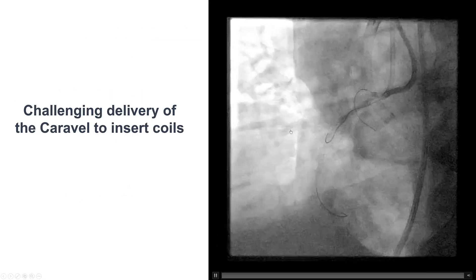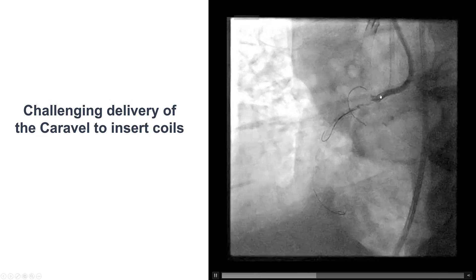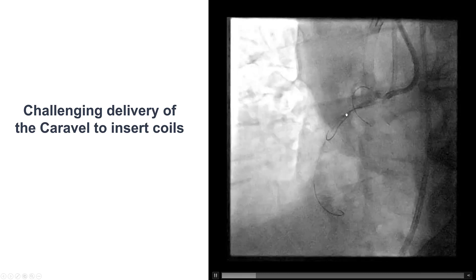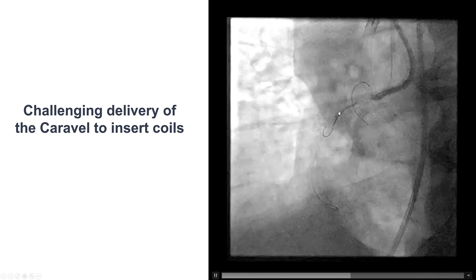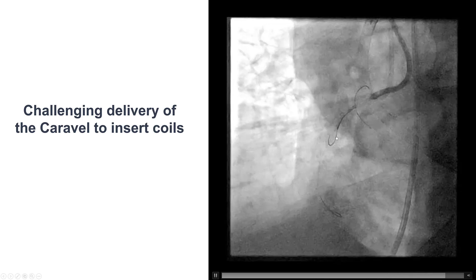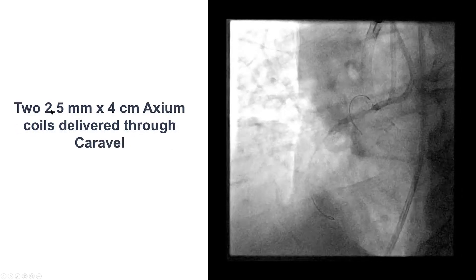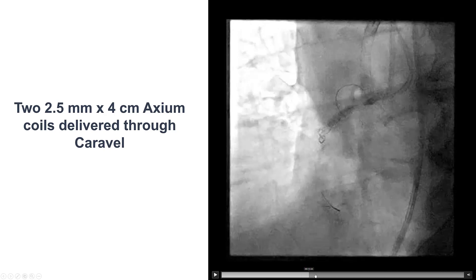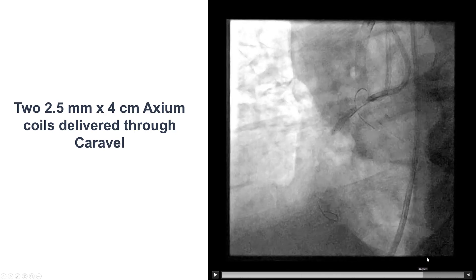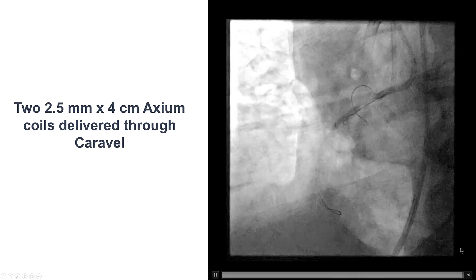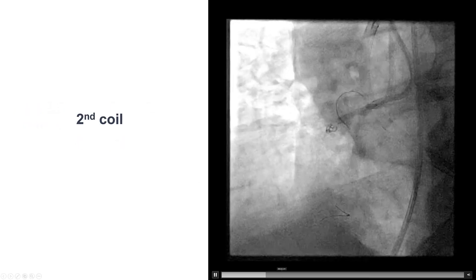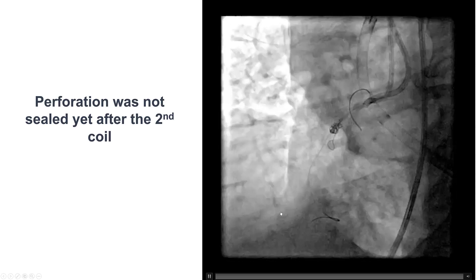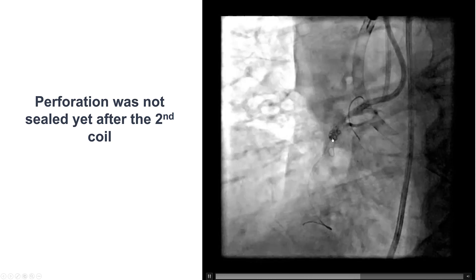The next step was to deploy coils. We had a Caravel microcatheter delivered to the mid-right coronary artery using the block-and-deliver technique: balloon inflated, deflated briefly to advance the microcatheter, then reinflated to prevent bleeding. We delivered two 2.5x4 Axium coils into the mid-right coronary artery, just proximal to the site of the perforation. Unfortunately, the perforation was not sealed.